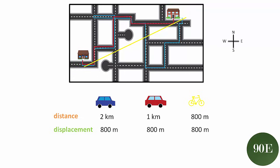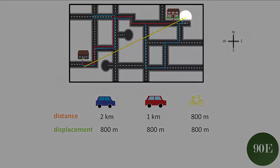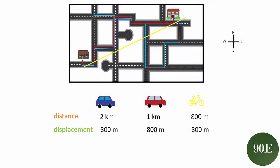Now we need to think about the direction. When your friend travels from their house to your house, they're going in a southwesterly direction. So their displacement is 800 meters southwest.